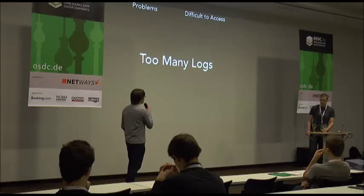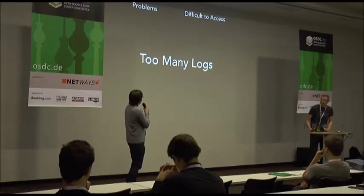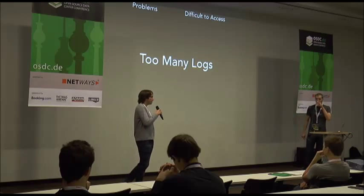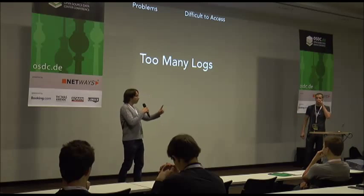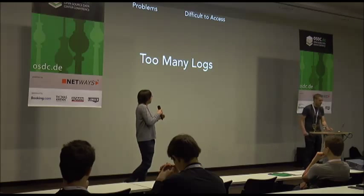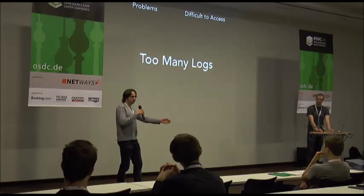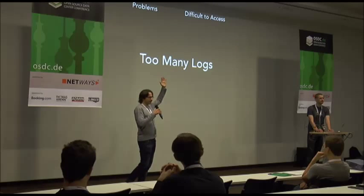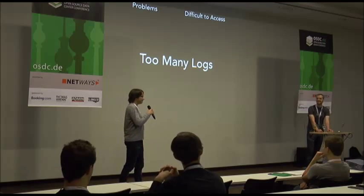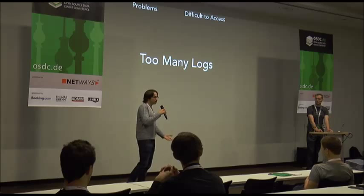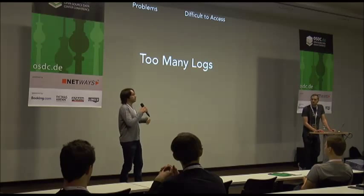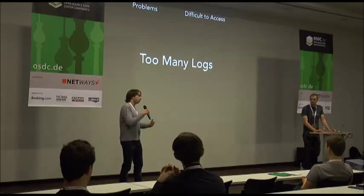Part of the accessibility problem is that there are just too many logs. If you have only one server, you're going to have multiple applications and system processes running on it. How many of you only have one server running your business? No one. So the distributed problem is already there — even on one server you might have 15, 20, maybe even 100 processes, all logging in different formats, in different locations on disk, in different ways.